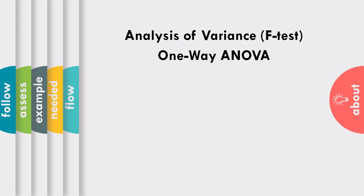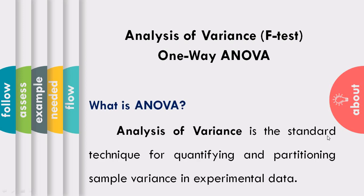What is analysis of variance? Analysis of variance is the standard technique for quantifying and partitioning sample variance in experimental data. When we talk about experimental data, we are not assuming research design, but rather in quantitative research — regardless of whether you are using experimental or descriptive research design — experimental data refers to the manner of determining participants as the source of data collection.